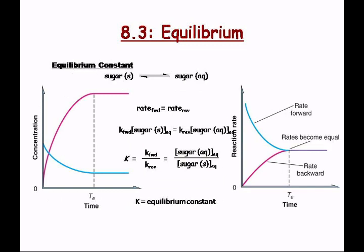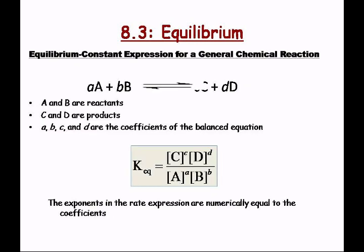Equilibrium constants aren't just for reactions — they can be for phase transfers too, like sugar solid going to sugar aqueous. The equilibrium constant for that reaction is the concentration of aqueous sugar over the concentration of solid sugar. The general equation: when aA plus bB goes back and forth to cC plus dD, K-eq equals the concentration of C to the power c times the concentration of D to the power d, over the concentration of A to the power a times the concentration of B to the power b. The exponents in the equilibrium expression are numerically equal to the coefficients.